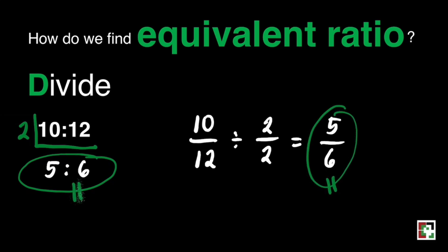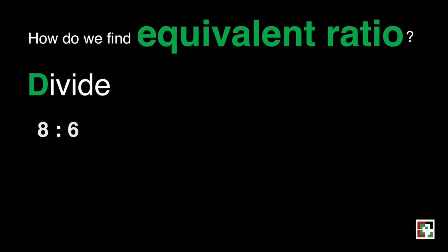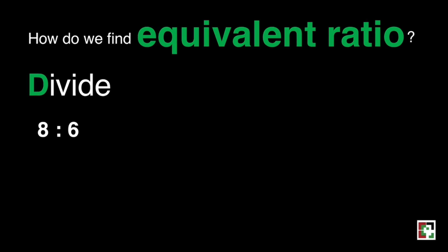We have another one here. That's 8 is to 6. What number can we divide both these two numbers? And that is 2. 8 divided by 2 is equal to 4, 6 divided by 2 is equal to 3. Then we have 4 thirds.